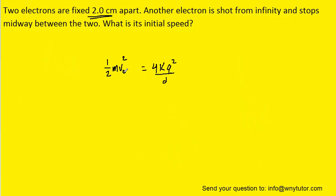We'll then solve this equation for the initial velocity v-naught. We'll multiply both sides by 2, divide both sides by m, and then finally take the square root of both sides.